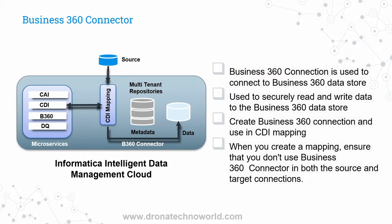This connector in short is used in a CDI mapping. Whenever you use a Business 360 connector, it is used to read and write data, and all these operations are very secure. When you create the Business 360 connection and use it in a CDI mapping, you must make sure you do not use the Business 360 connector in both source and target. You cannot use source and target both as Business 360 components.